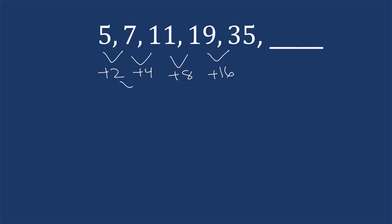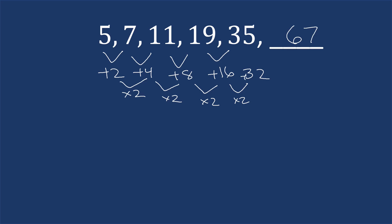So this number that we're adding is doubling each time — going from two to four is times two, four to eight is times two, and eight to sixteen is times two. We assume this pattern continues, so sixteen times two gives thirty-two. Then we add thirty-five and thirty-two, which gives us sixty-seven. So sixty-seven would be the next number in that pattern.